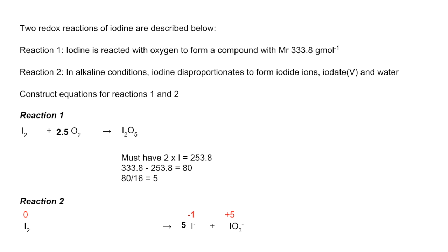Because we've now got 6 I's on the right hand side, we're going to need a 3 in front of the I₂. Now we're going to bring those hydroxide ions in. We've got a total charge on the right hand side of 6 minus, no charge on the left, so to get the charge to balance we need 6 hydroxide ions in there.